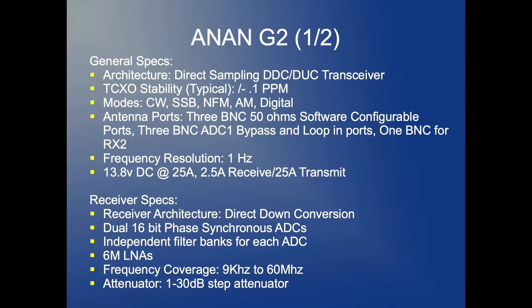On the receiver side, the receiver architecture is direct down conversion. It consists of dual 16-bit ADCs — those are analog to digital converters — with independent filter banks for each ADC, LNAs, wide-ranging frequency coverage, and an attenuator of up to 30 dB.